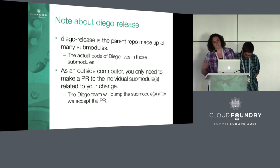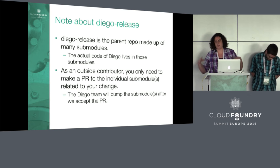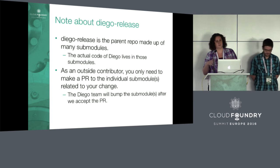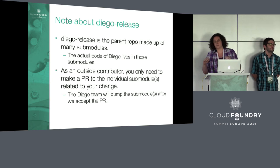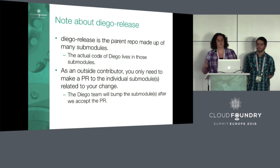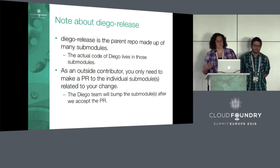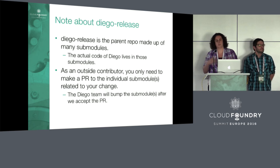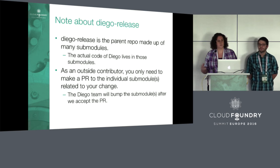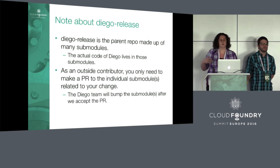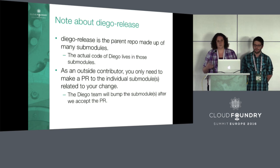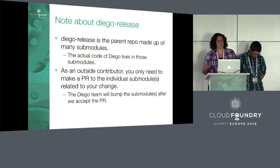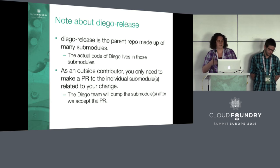A quick note about how our repos are structured in Diego: we have one repo called DiegoRelease, which is the parent repository of all our microservices — it's our Bosh release, a GoPath, and the parent of all subcomponents. Each subcomponent is a submodule inside DiegoRelease, and all our Go code lives in one of these submodules. Most of the time, you'll be submitting pull requests to a submodule, not to DiegoRelease directly. Once accepted, someone from the Diego team will commit to DiegoRelease to bump that submodule's SHA. You'd only make PRs to DiegoRelease itself for Bosh release-related changes — like manifest generation or job deployment configuration.